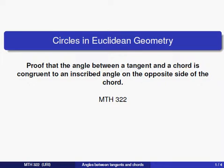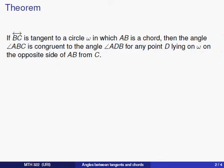Now again we'll say this more precisely and then we'll take a look at a picture to make it crystal clear. We're going to suppose that the line passing through B and C is tangent to a circle omega in which AB is a chord.